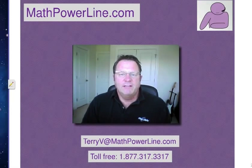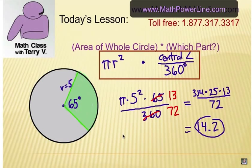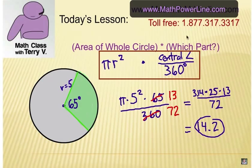Alright, let's go to today's lesson. Just a reminder — I said in a previous video that you take the area of the entire circle, which is pi r squared, and you multiply it by which part you're talking about. So if we want to know the area of this green shaded sector of a circle, we take the central angle that creates it — in this case 65 — and we divide by 360. So it's the entire area of the circle times the part you're talking about.